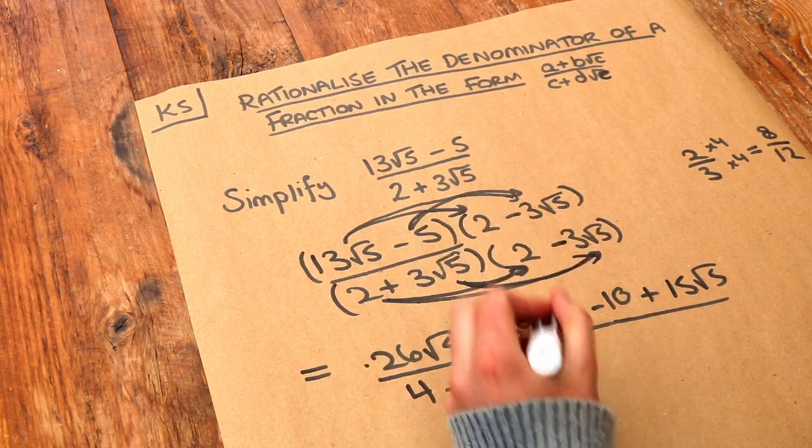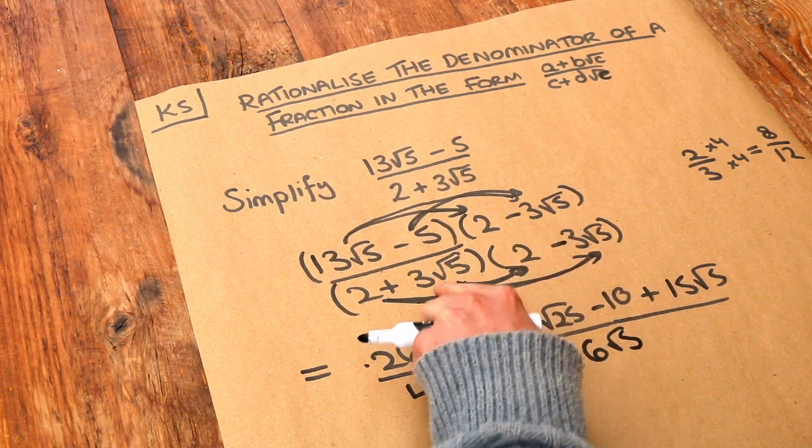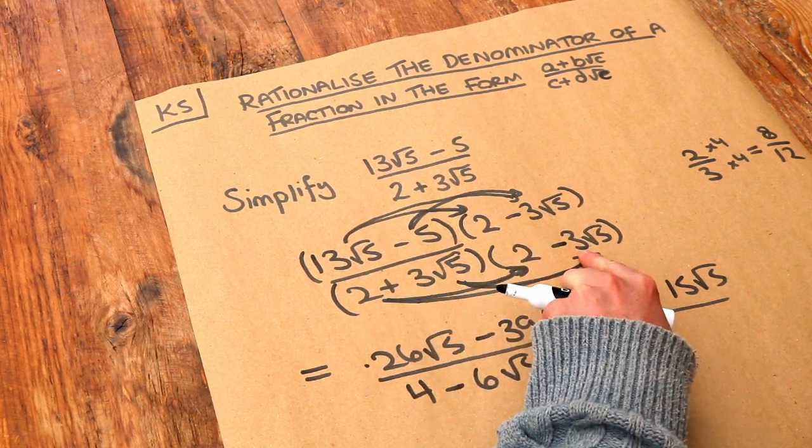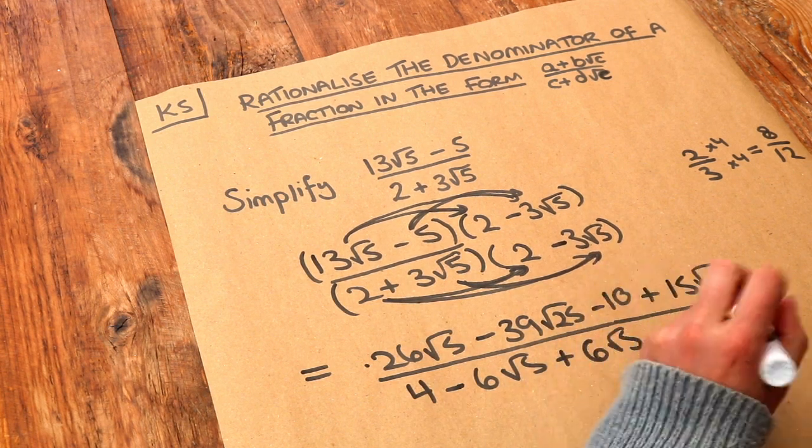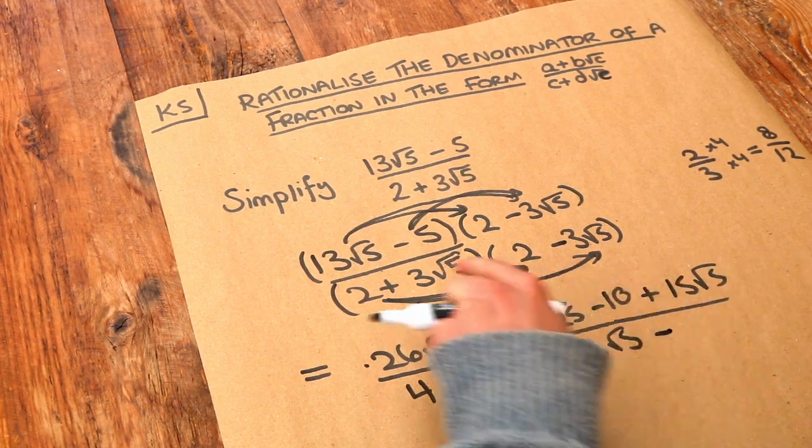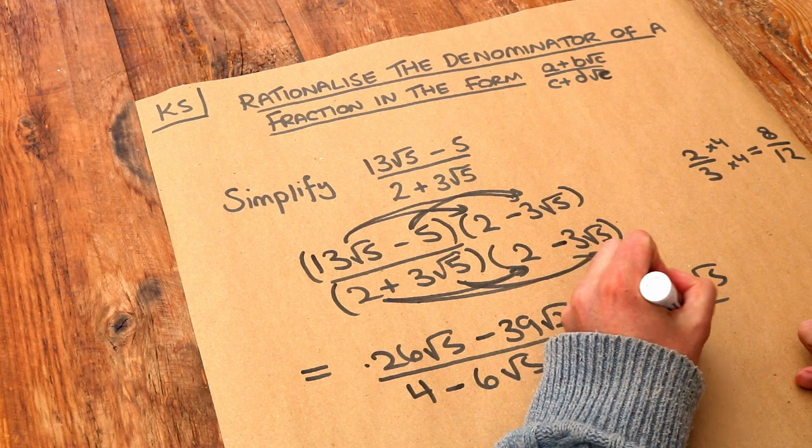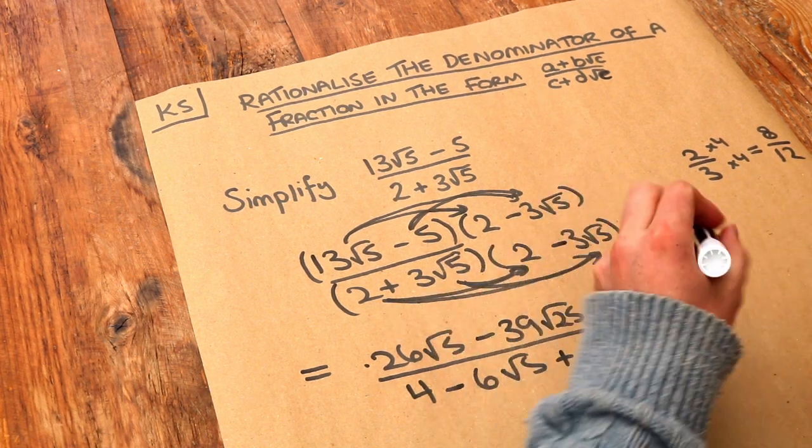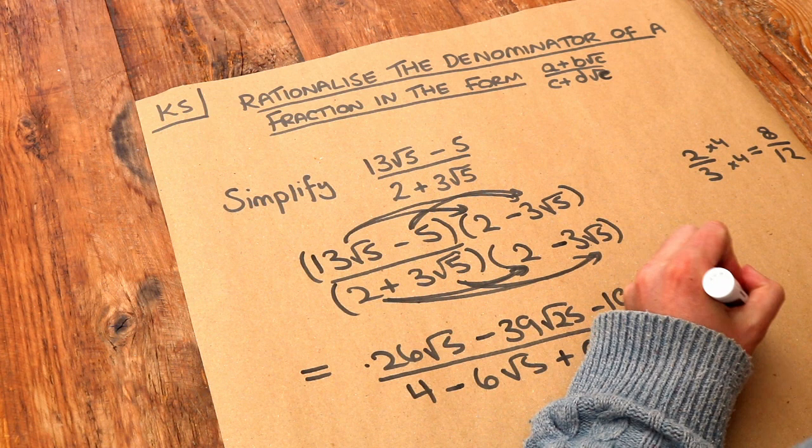And then the second thing times each of these things. So 3 root 5 times 2 is plus 6 root 5. And then 3 root 5 times minus 3 root 5. Well, positive times negative is negative. Then we times the non-surds together. 3 times 3 is 9, and then we times the surds together. Root 5 times root 5 is root 25.